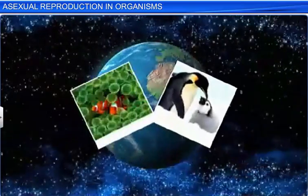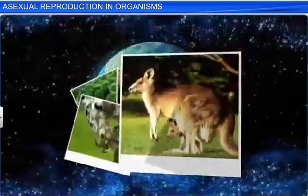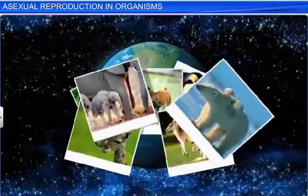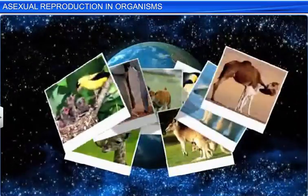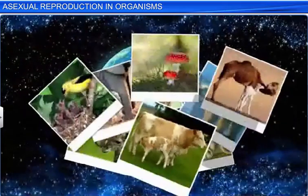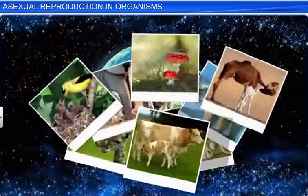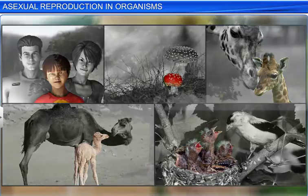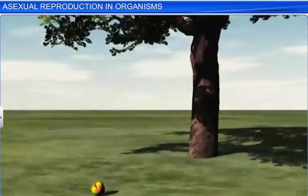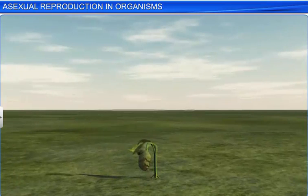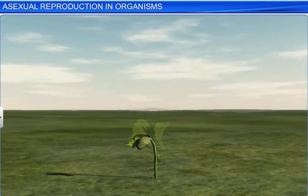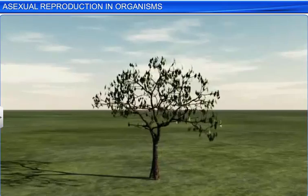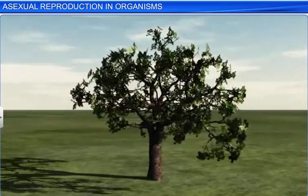Our earth is home to countless plant and animal species, all of which have a limited life span and are bound to die. Yet these species have existed for several thousands of years. That's because living organisms can reproduce — they give rise to offspring, which in turn grow and reproduce their own offspring of the same kind. This ensures survival of the species generation after generation.